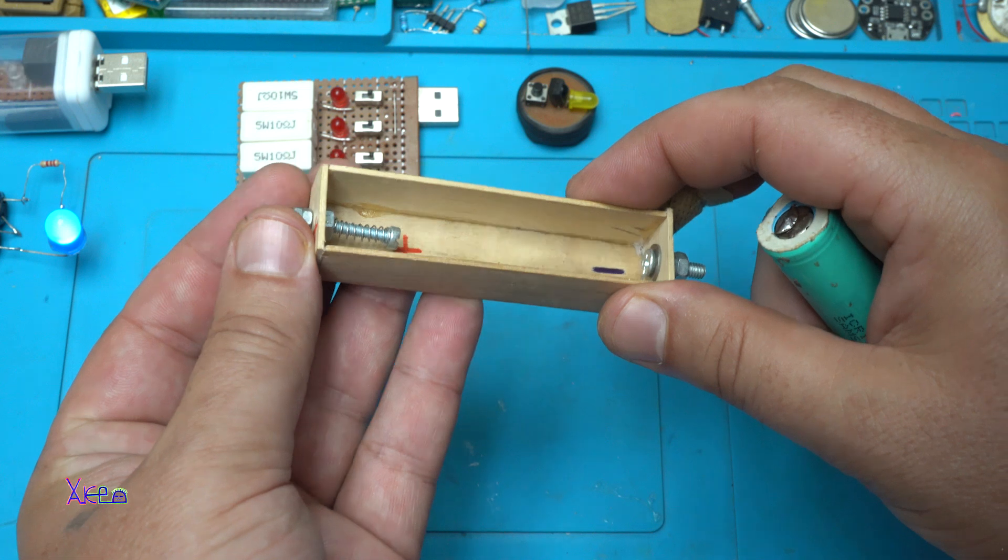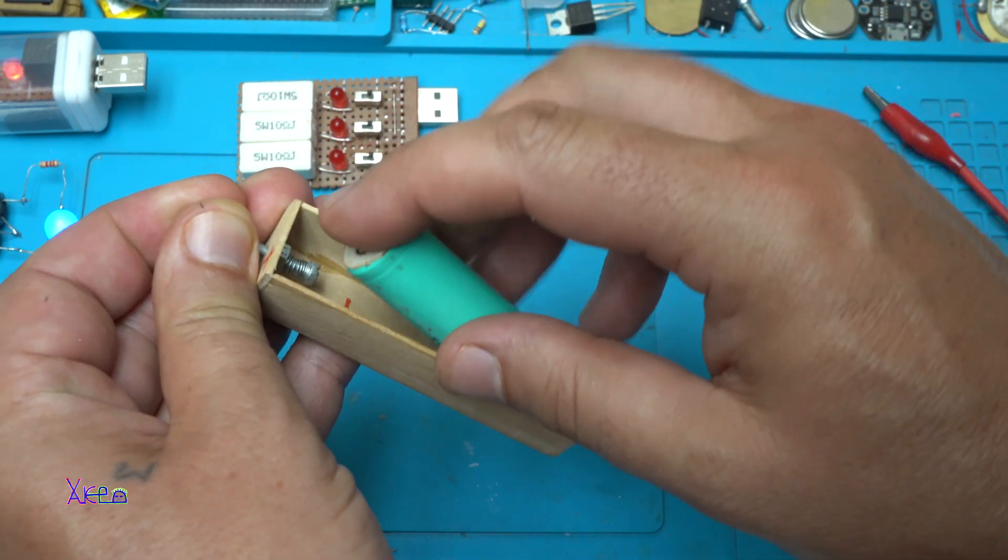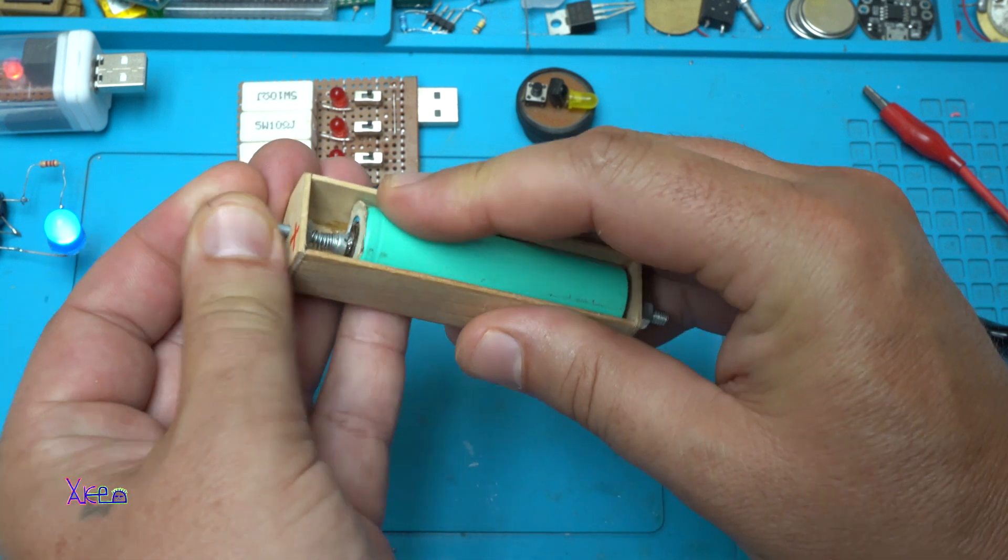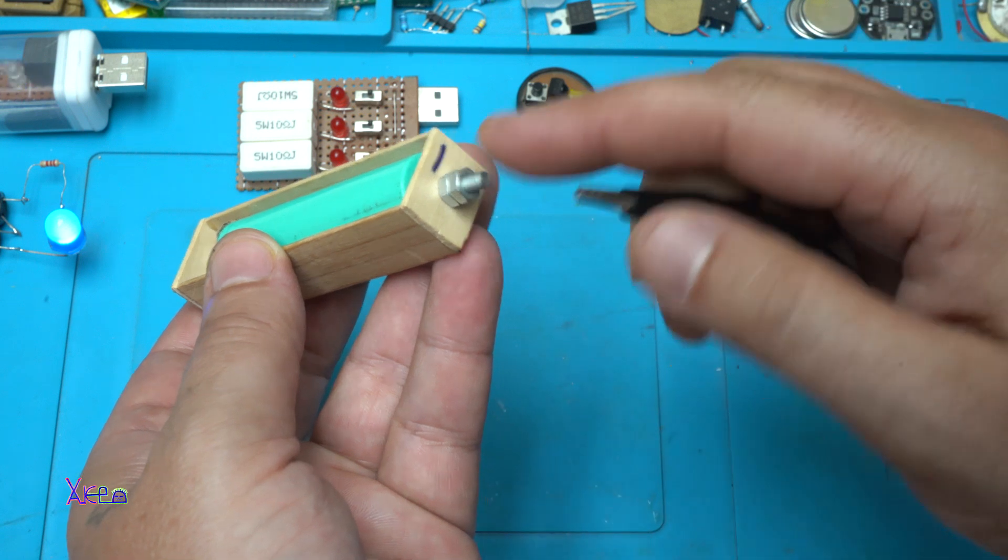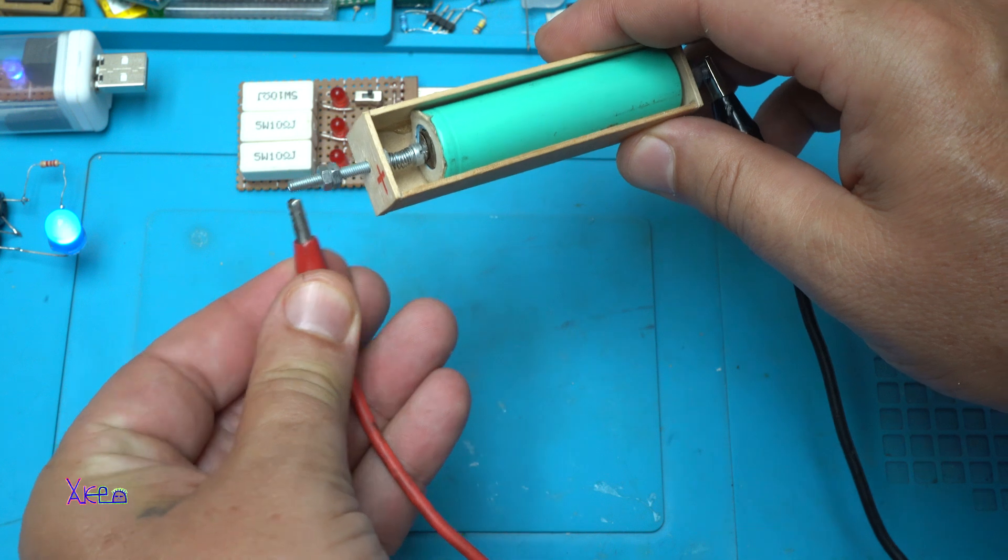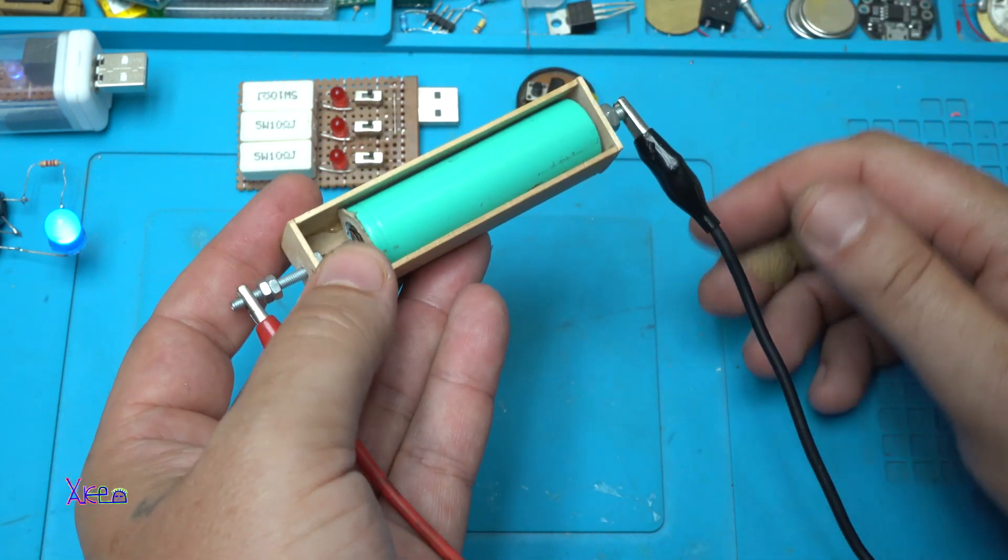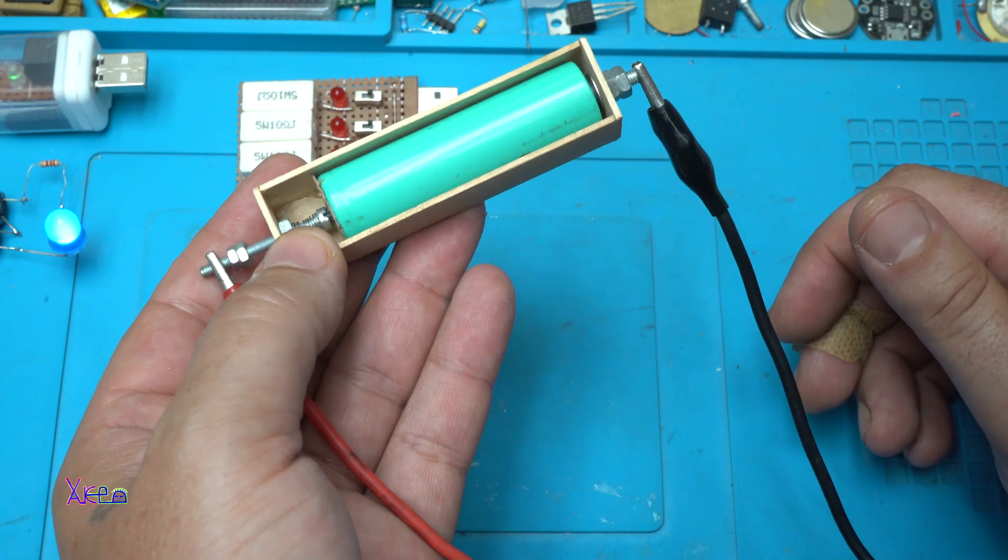So how it works: pull this side of the screw, place the battery and release. On this side goes the negative terminal, here goes the positive terminal, and you can charge it or you can use it as a power source.